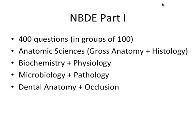This exam consists of 400 questions in groups of 100, so each section of the exam you'll have 100 questions. They're going to include topics from the anatomic sciences — mostly gross anatomy and histology — biochemistry and physiology, microbiology and pathology, and dental anatomy and occlusion.